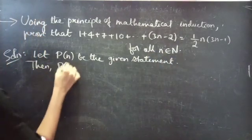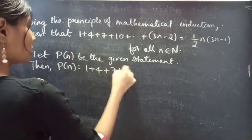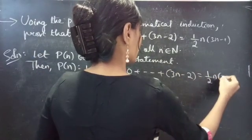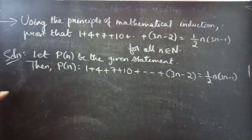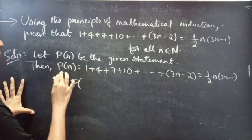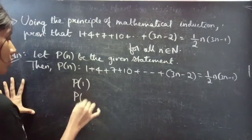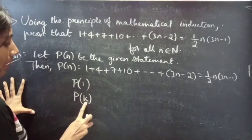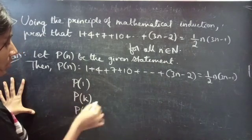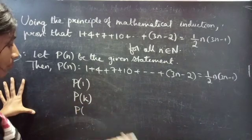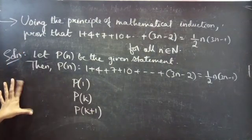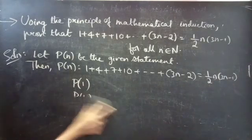P(n) states that 1 + 4 + 7 + 10 + ... + (3n - 2) = (1/2) · n · (3n - 1). Now the actual problem begins. We have to show the statement is true for n = 1, then assume the statement is true for n = k (where k belongs to natural numbers), and using that we'll show the statement is true for n = k + 1.